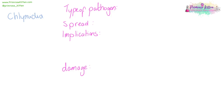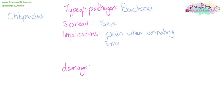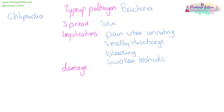Chlamydia is a bacteria. It is spread via unprotected sex and is one of the most common sexually transmitted infections in the UK — about 200,000 people test positive for chlamydia in England each year, and 70% of those are under 25. The implications include pain when urinating, a discharge from the penis, anus, or vagina, bleeding between periods, or swollen testicles. The damage can be long term — it can lead to infertility — so the best thing to do is just wear a condom.